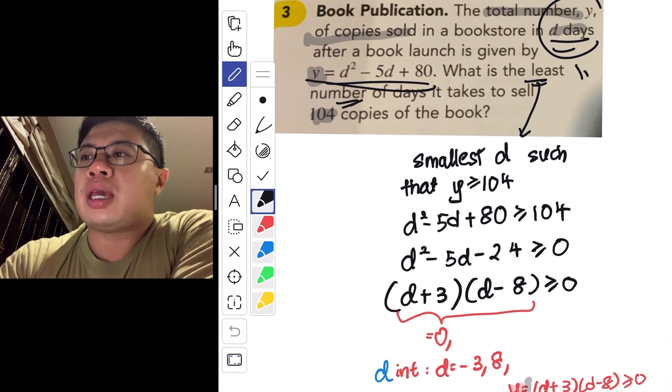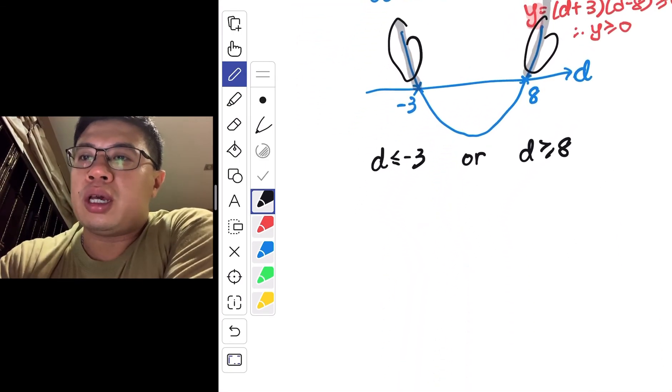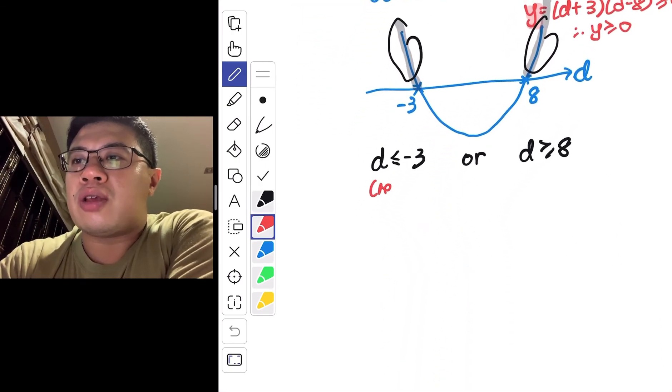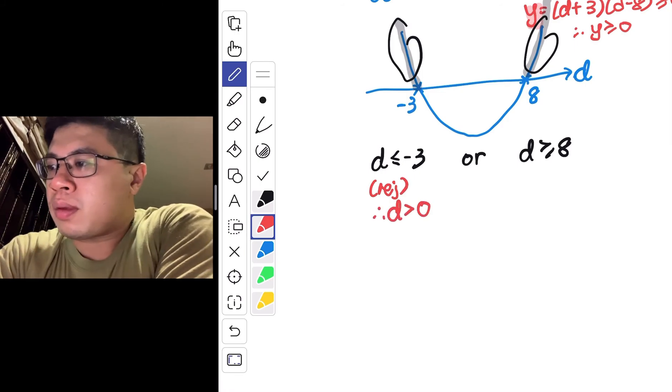So d must always be positive because you are talking about number of days. So here, definitely for d less than negative 3, you have to reject. Because your d has to be positive.